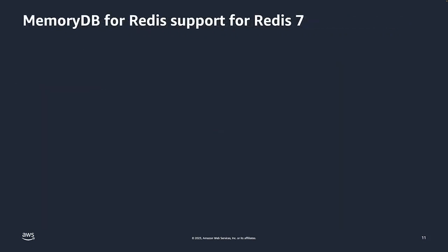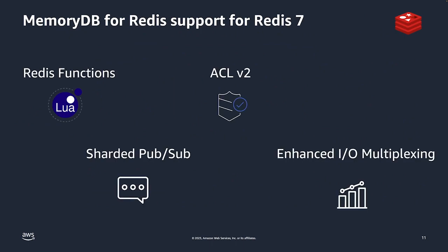We recently released support for Redis 7. That means we have Redis functions, access control list version 2, sharded pub/sub, and enhanced IO multiplexing.